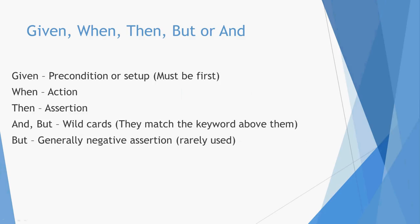And and But are kind of wildcards because they match the keyword above them. But is generally used as a negative assertion. I've found that But is rarely used and many times it can lead to confusing wording. So if you use it, use it with caution because it sometimes becomes hard to read.